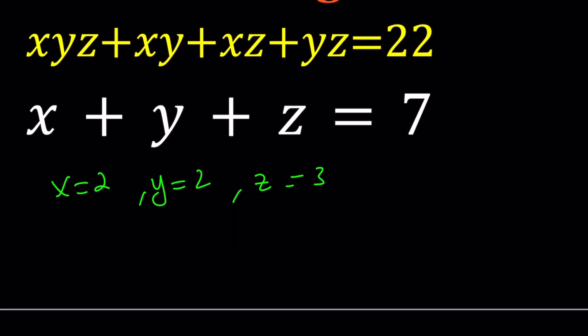Let's go ahead and plug it in. I mean 2 + 2 + 3 is 7, so that's good. xyz is going to be 12, xy is going to be 4, xz is going to be 6, yz is going to be 6.